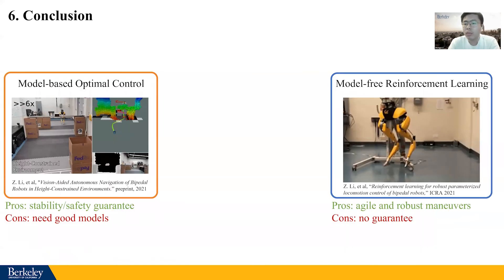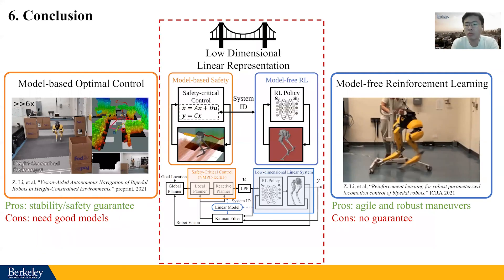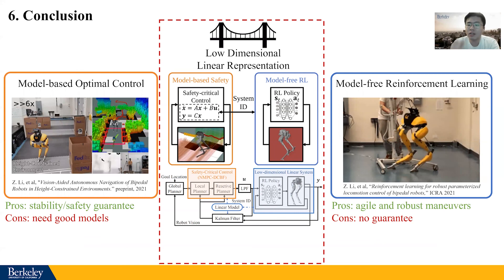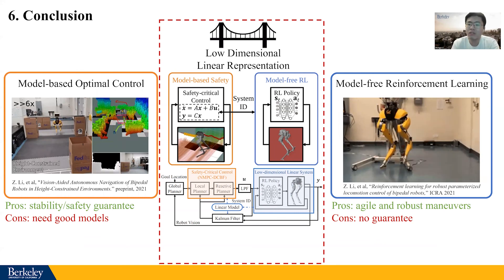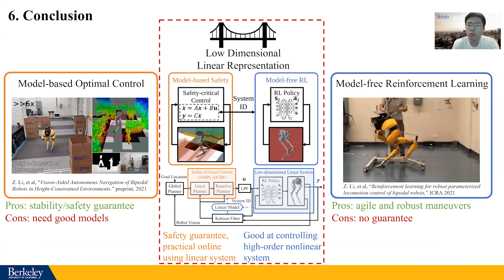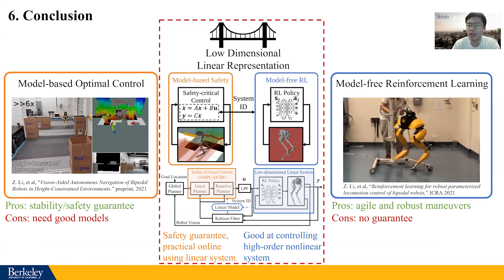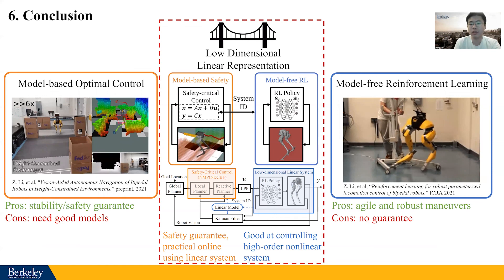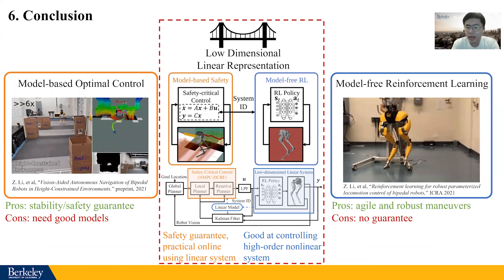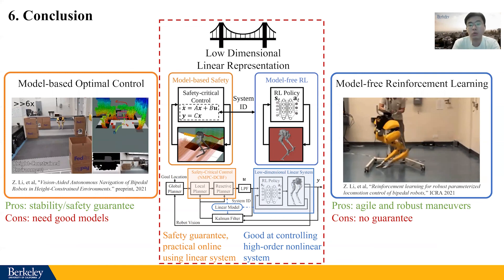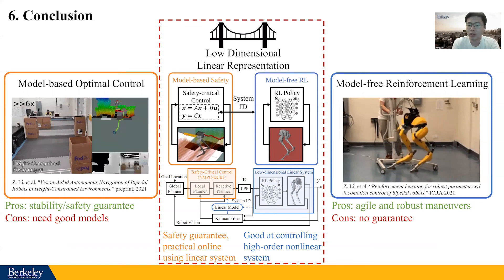In conclusion, we propose a new direction to bridge model-based optimal control and model-free reinforcement learning by examining the closed-loop dynamics controlled by an RL policy. This combines the advantages of both sides: we let RL wrap up the high-order nonlinear dynamics to yield a linear model, and we then use model-based methods to provide safety guarantees on top of it, making it more practical to deploy. Thanks, and happy to take questions.